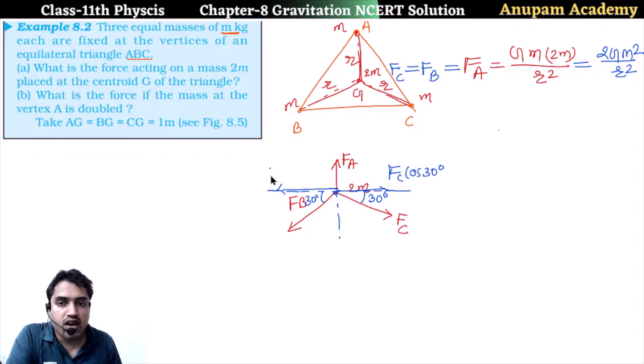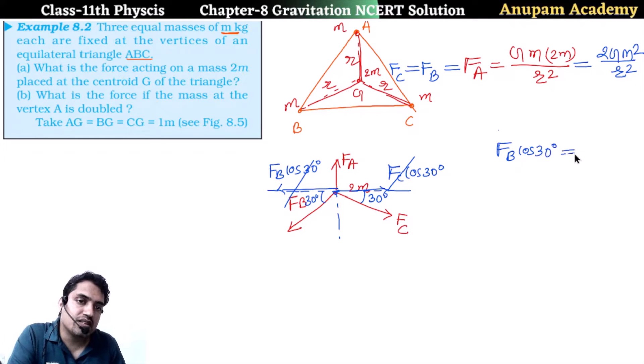And these two forces will be cancelled out, equal in magnitude. F_B cos 30 degrees is equal to F_C cos 30 degrees. So the horizontal component is equal to 0.